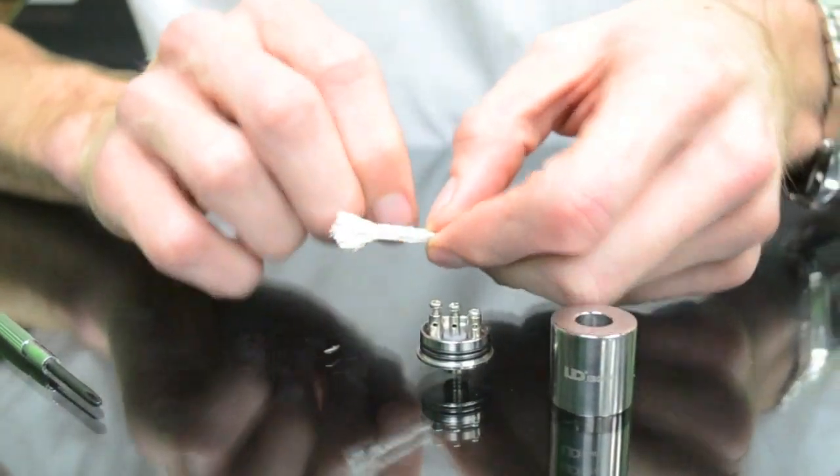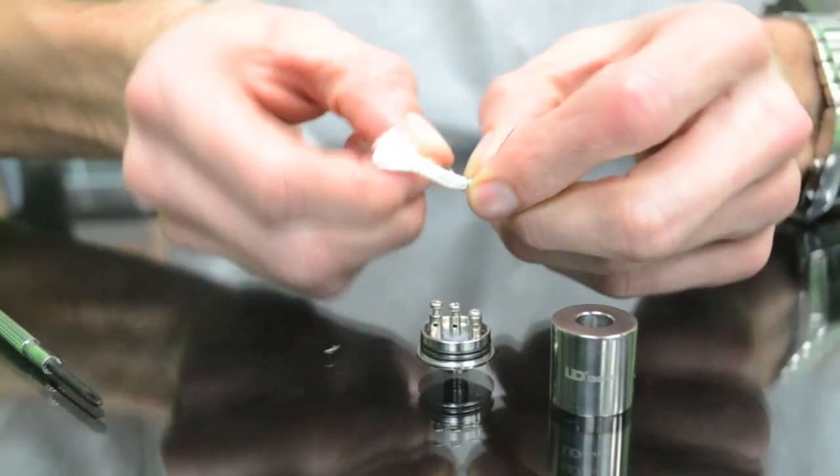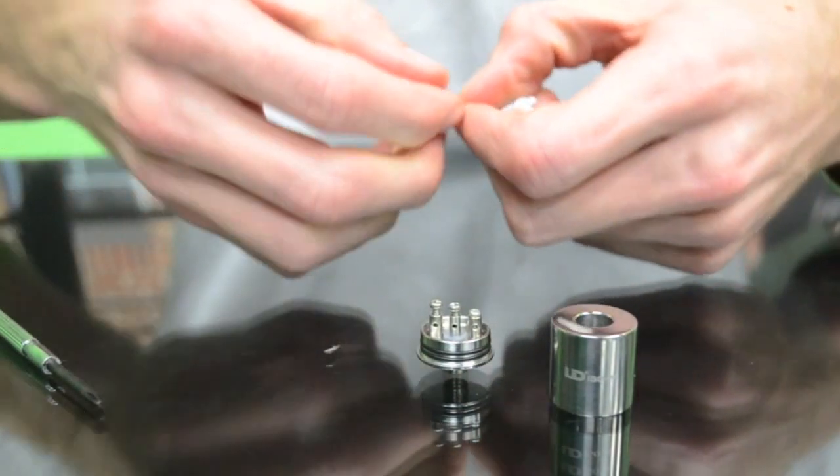You're going to start with the wrap. You're going to wrap it around your wick a couple times.